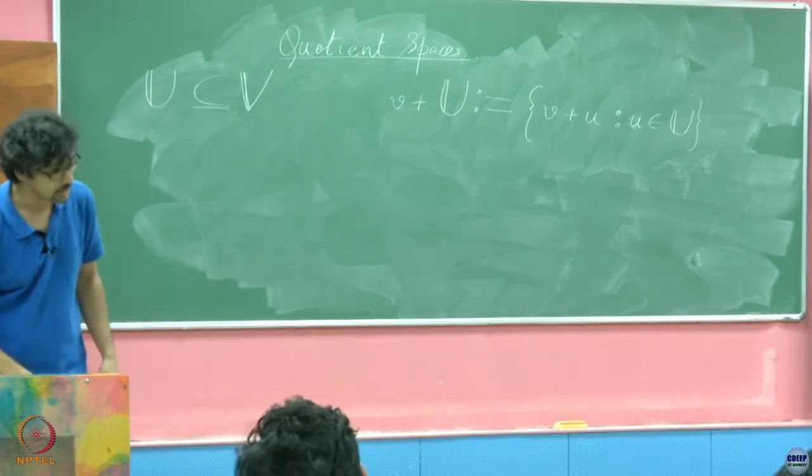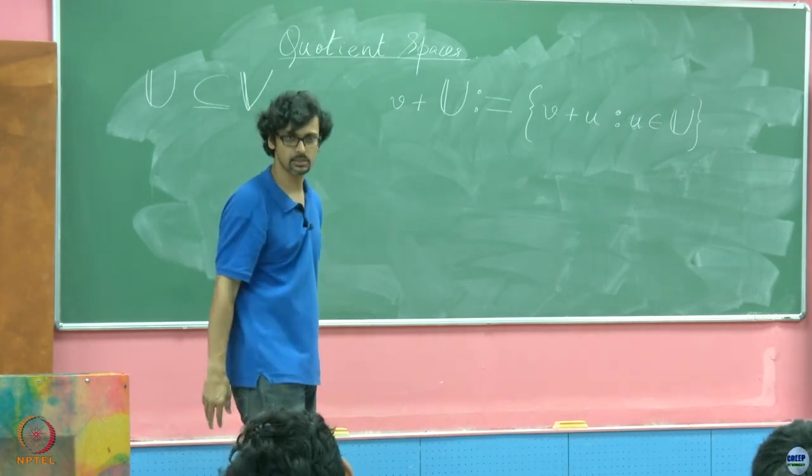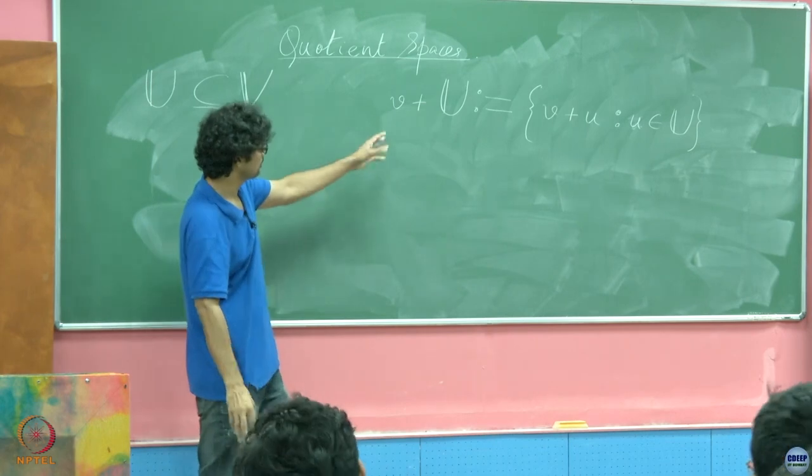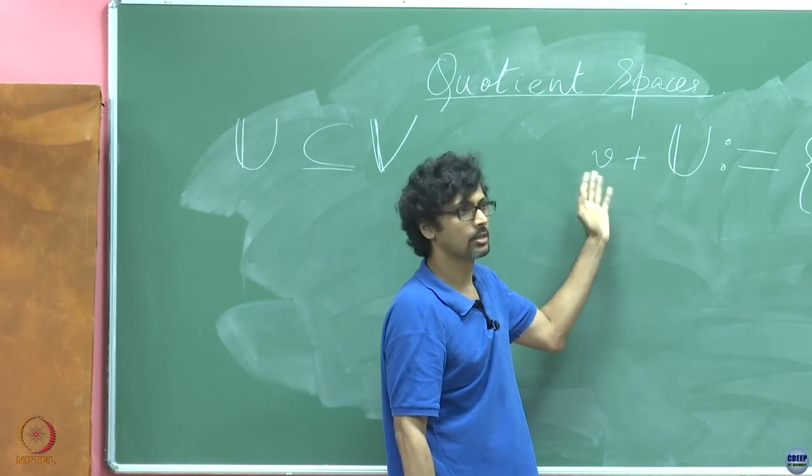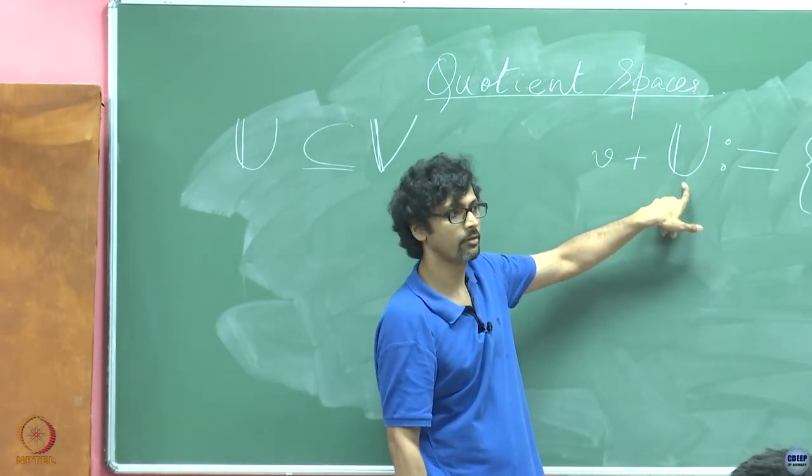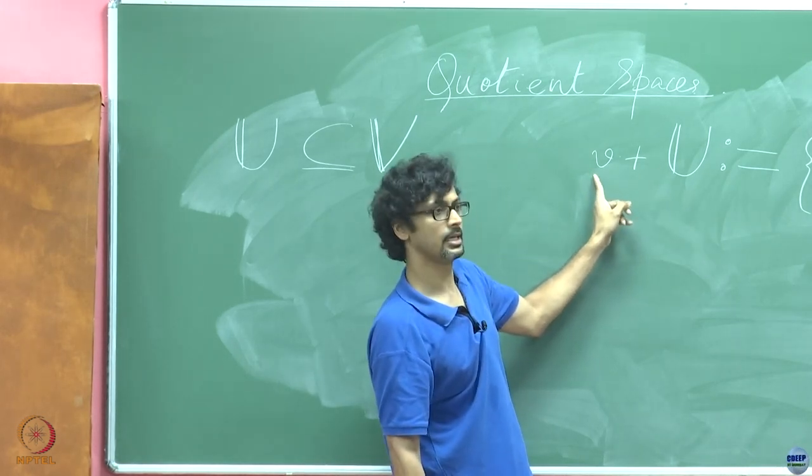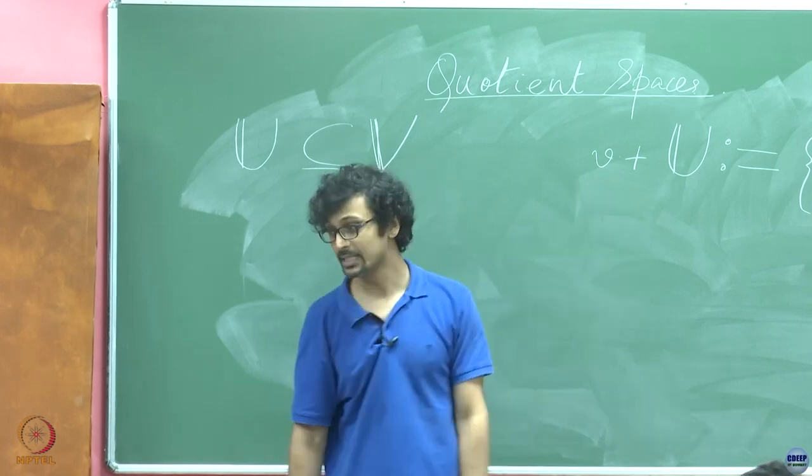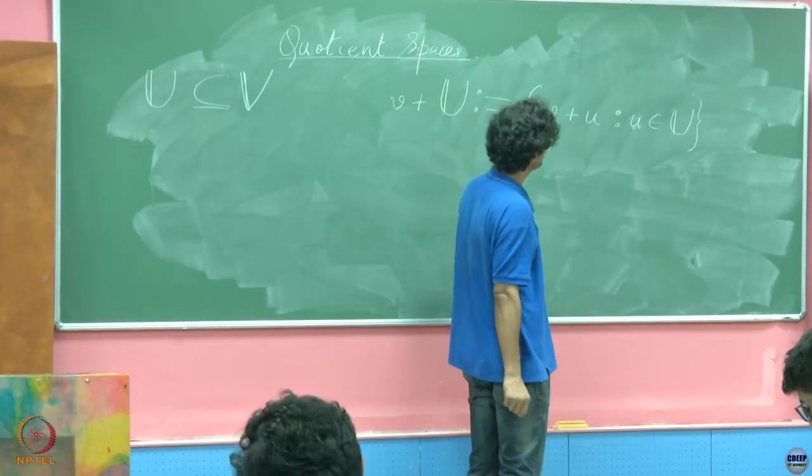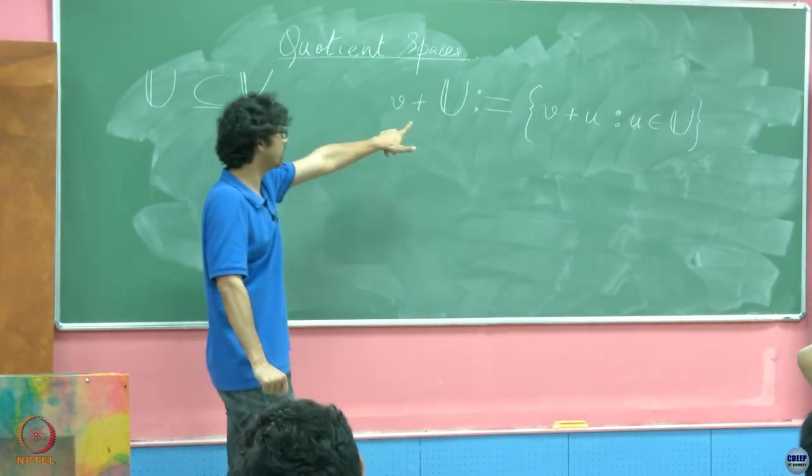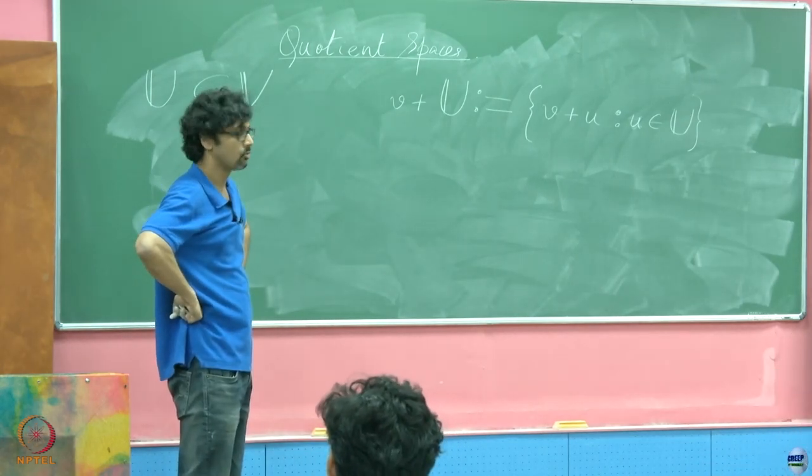Already a very weird looking notation and something that we generally say you should not do which is adding apples and oranges. But for want of a better notation, this is how we will represent this. This is not the common addition. This is a subspace of the vector space V, and this is a vector V sitting inside the vector space, big V here.